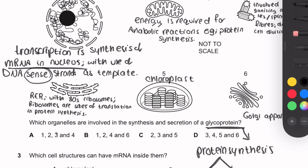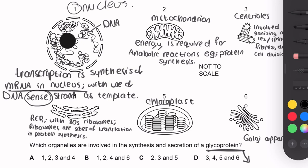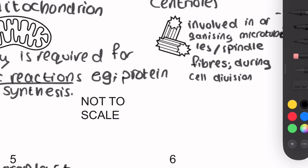The mitochondrion is the site of ATP synthesis. ATP is hydrolysed to release energy, which is required because protein synthesis is an anabolic reaction — building a large complex molecule from smaller, simpler ones. So we include organelles 1 and 2. Centrioles are involved only in organising microtubules during cell division, not in protein or glycoprotein synthesis, so we cancel number 3.